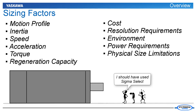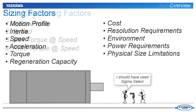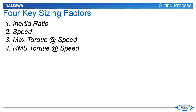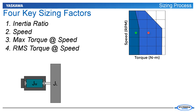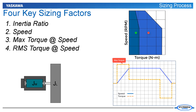such as cost, encoder resolution, environmental ratings, power requirements, or limitations in available space. While all of these factors are important, the core process in servomotor sizing involves four key factors. Given that the inertia ratio and motor speed are appropriate for the application, both the max torque and the RMS torque must lie within the motor's capability. The remainder of this e-learning module will discuss this process in more detail.